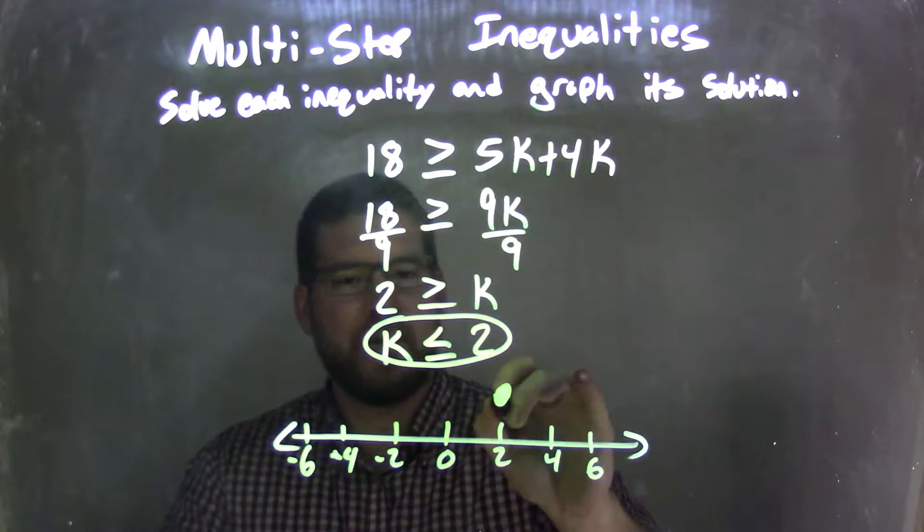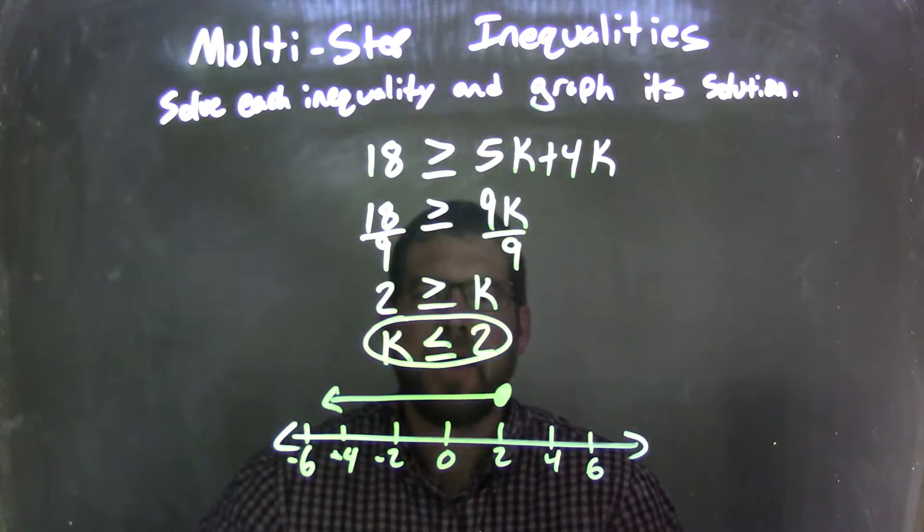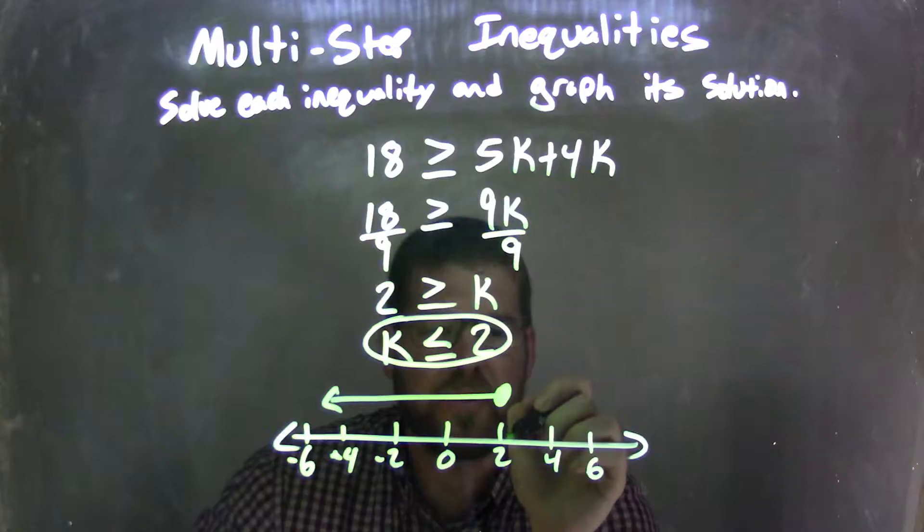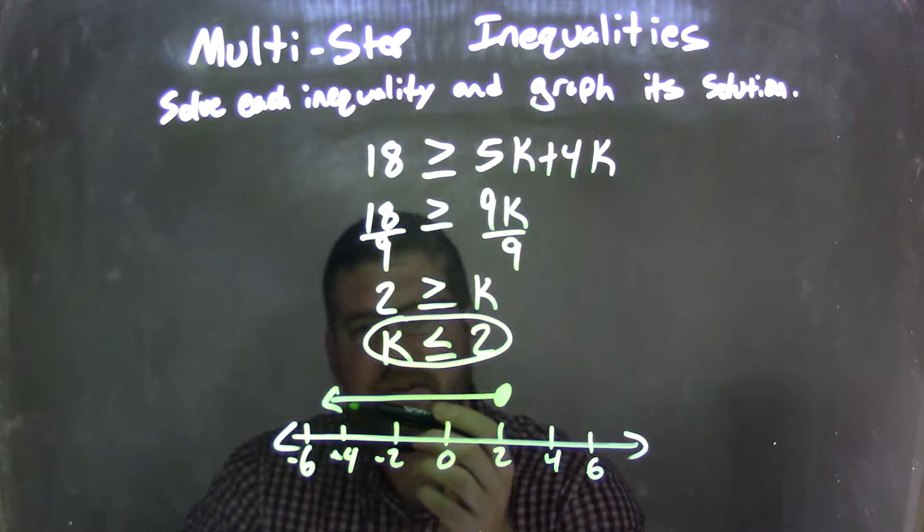And it's less than, so I'm going to pull my arrow to the left. And now we have k is less than or equal to 2. I'm going to show the closed circle again at 2 and less than to the left.